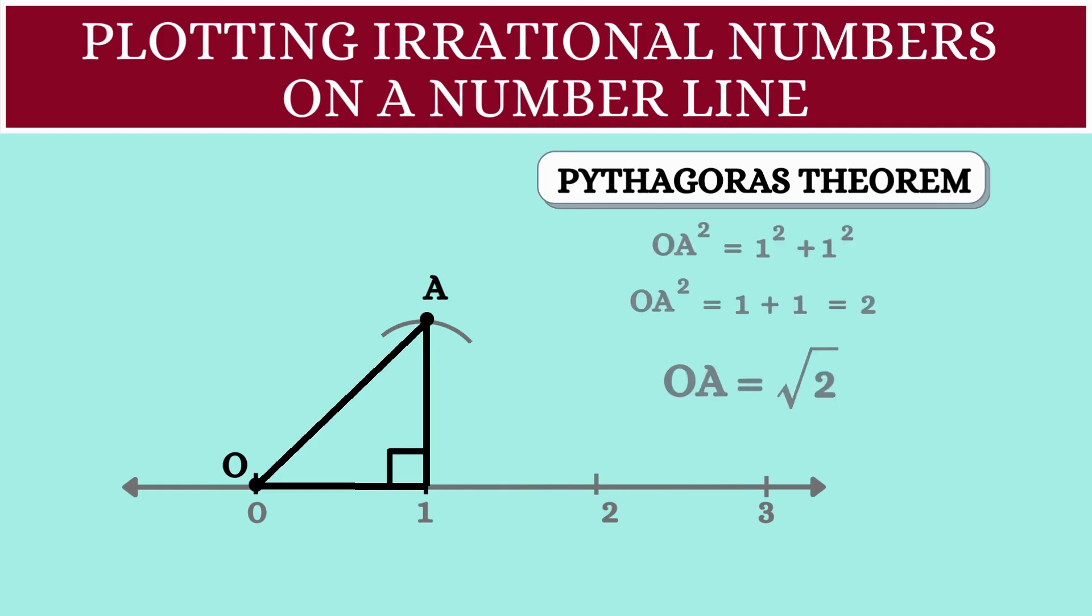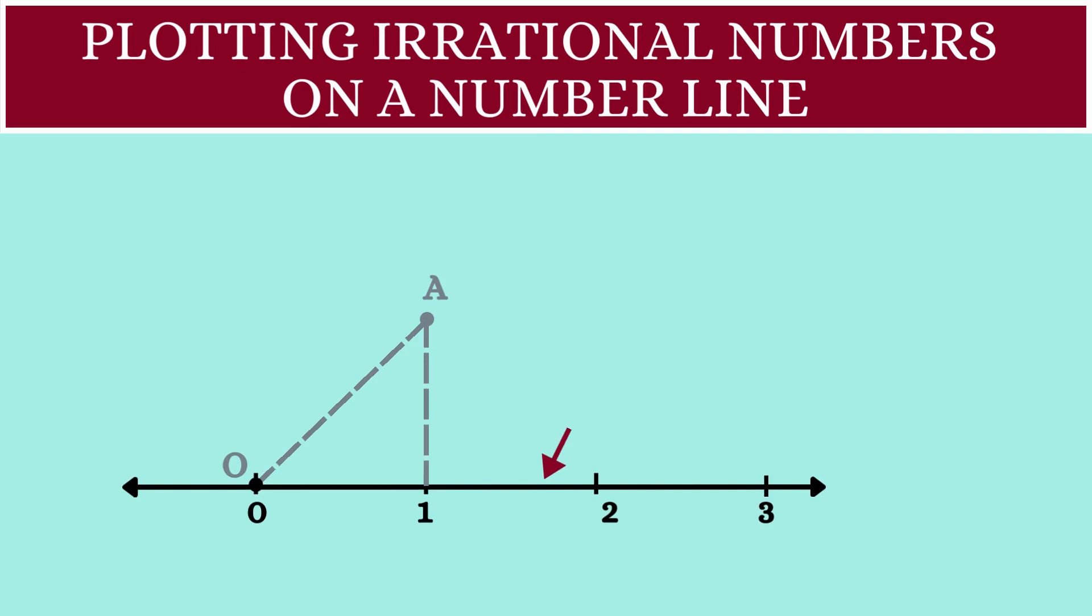But wait, we are not done here. We need this length square root of 2 on the number line. So, with O as the center and OA as the radius, we'll draw an arc such that it cuts the number line. We'll mark this point as B. Now, OB will also be the same length as OA. So, the point B is square root of 2.